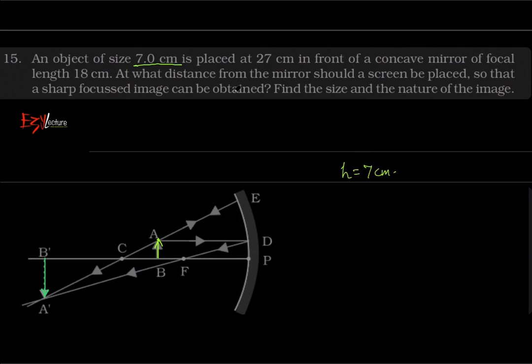The object is placed at 27 centimeter in front of a concave mirror. It means that u is magnitude-wise 27 centimeter, but you have studied in sign convention that light ray propagation in opposite direction means negative distance. The distance from the pole in opposite direction is 27 centimeter, so it should be negative here.